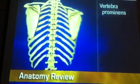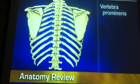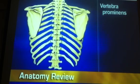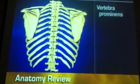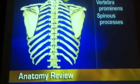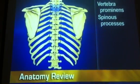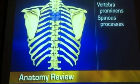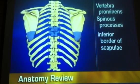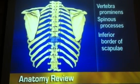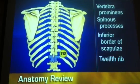On the posterior thorax, use different surface landmarks. With the person's head flexed, feel for the most prominent bony spur, called the vertebra prominens, or the spinous process of C7. Count down the spinous processes. At the seventh or eighth rib, you'll reach the inferior border of the scapula. Finally, you'll reach T12 and the twelfth rib.